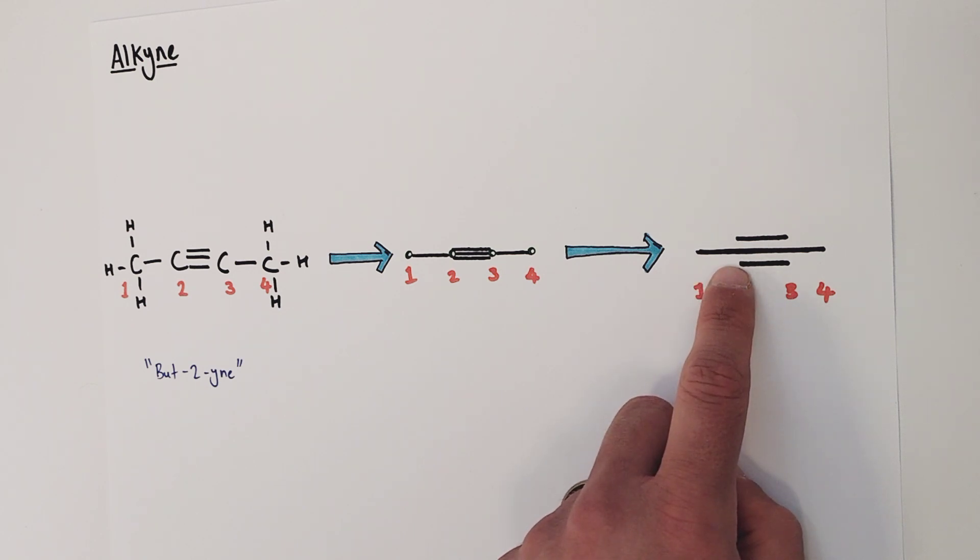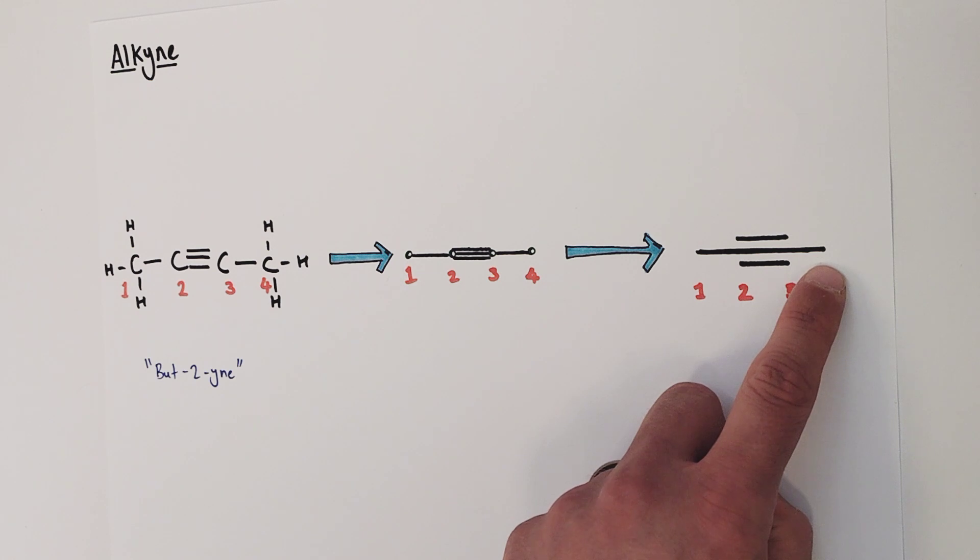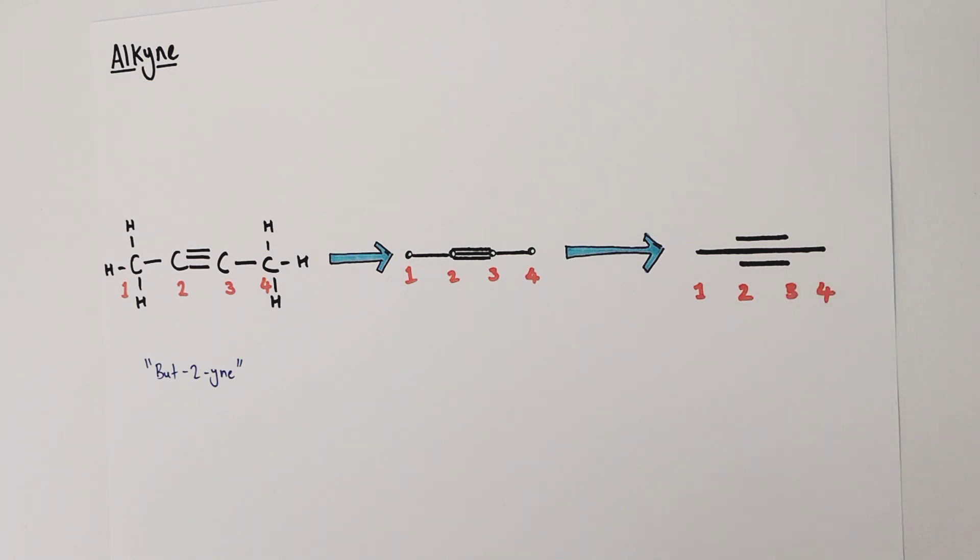One, two, three, four carbons in the chain overall. So quite an advanced example there. But again, still following the same pattern, trends, and rules that all the other skeletal formulae we've drawn so far have been doing.